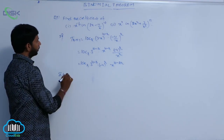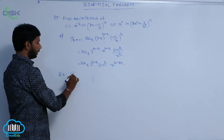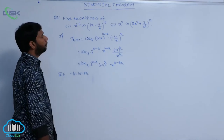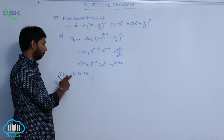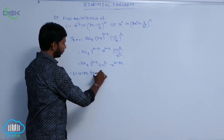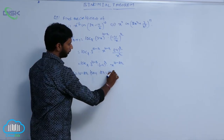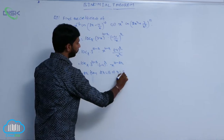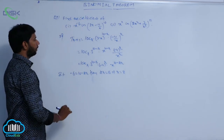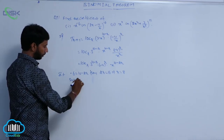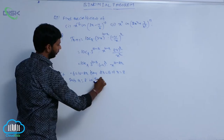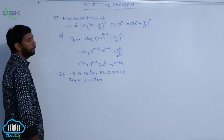For the coefficient of x power minus 6, set the power of x equal to minus 6: that is, 10 minus 2r = minus 6. Then 2r = 16, so r = 8. Substitute the value r = 8.